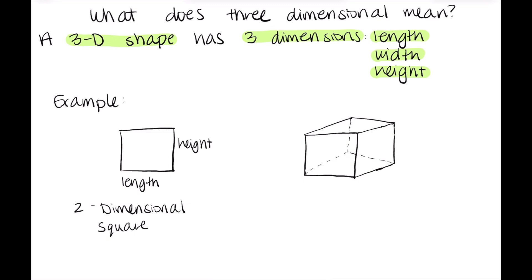Now looking at this other example, see how this one looks 3D, right? It's like something you could pick up. That's because this is a three-dimensional shape. It has length, it has height, but it also has width. And this three-dimensional shape would be classified as a cube.